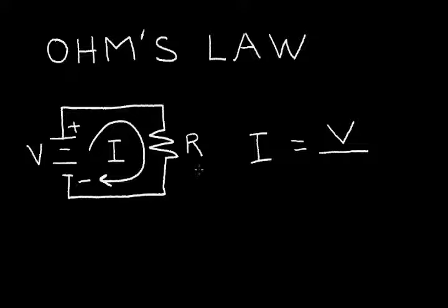But as resistance increases, we have more resistance to current flow. So as resistance increases, the current decreases. So there's an inverse relationship between resistance and current. So resistance goes in the denominator.